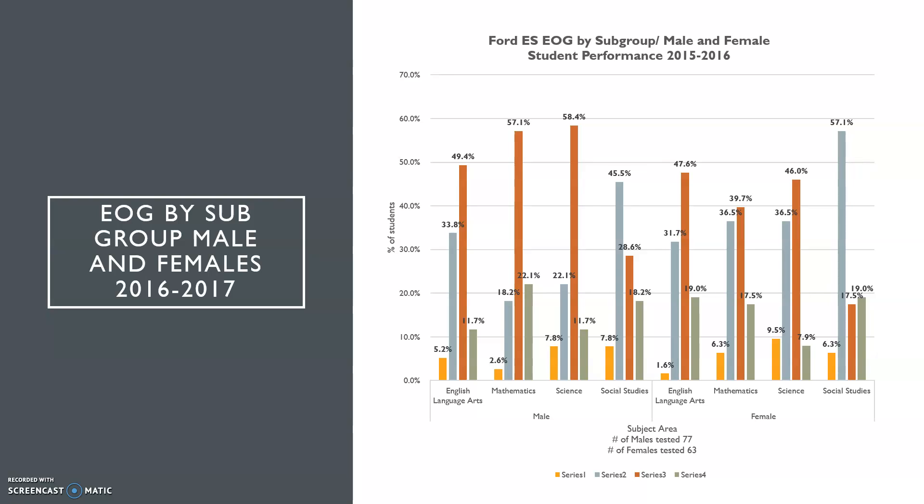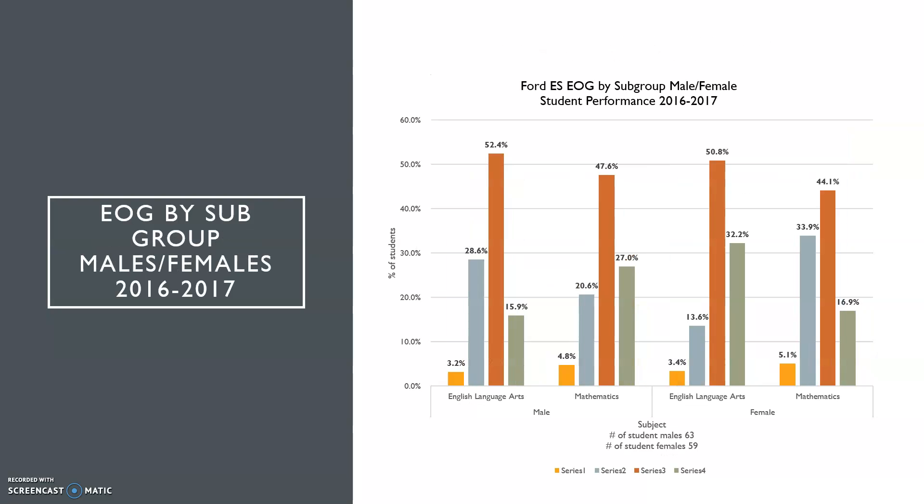In 2015-2016, males performed much higher in math with 57.1 percent proficiency, whereas females at Ford performed at 39.7 percent. There were 77 males tested and 63 females tested. In 2016-2017, the scores were more comparable: English Language Arts proficiency was 52.4 percent for males and 50.8 percent for females. In mathematics, males were at 47.6 percent proficient and females at 44.1 percent proficient.